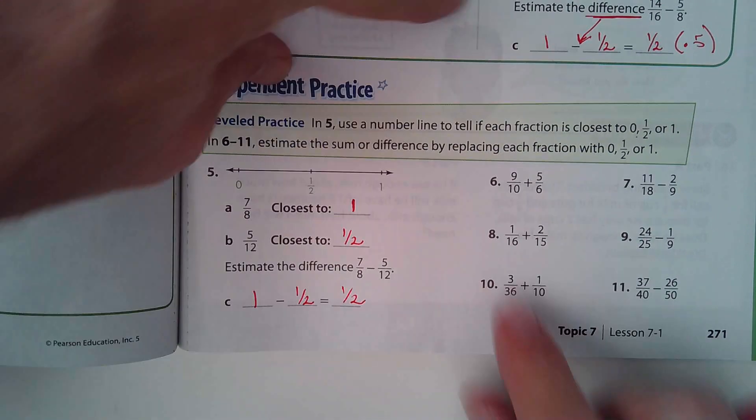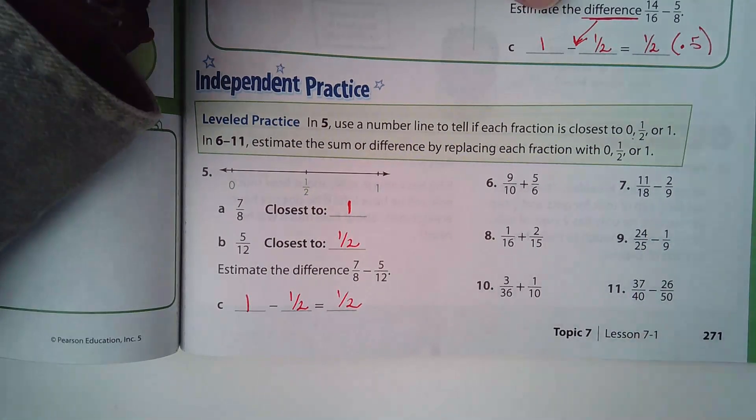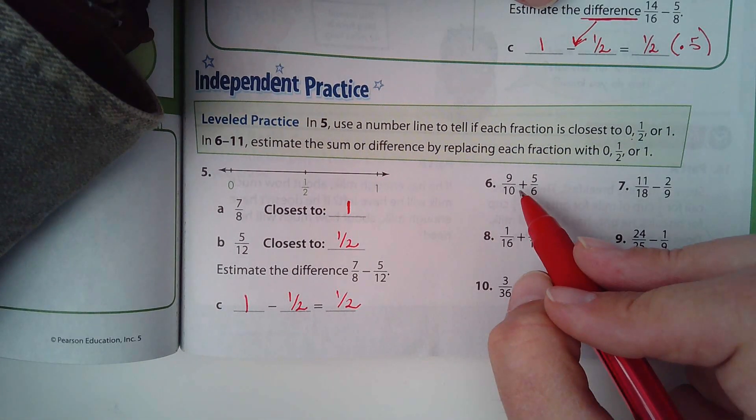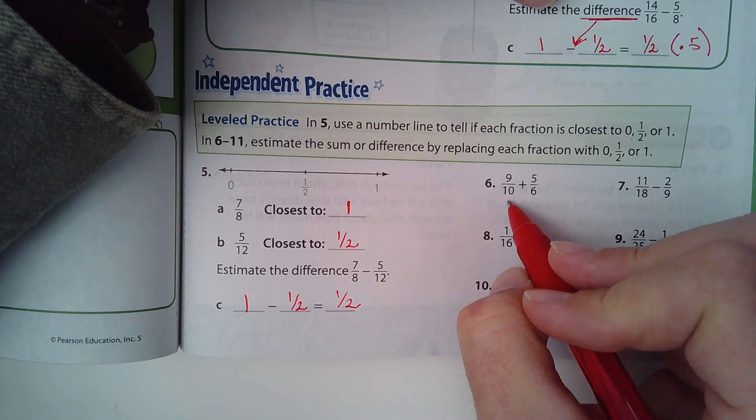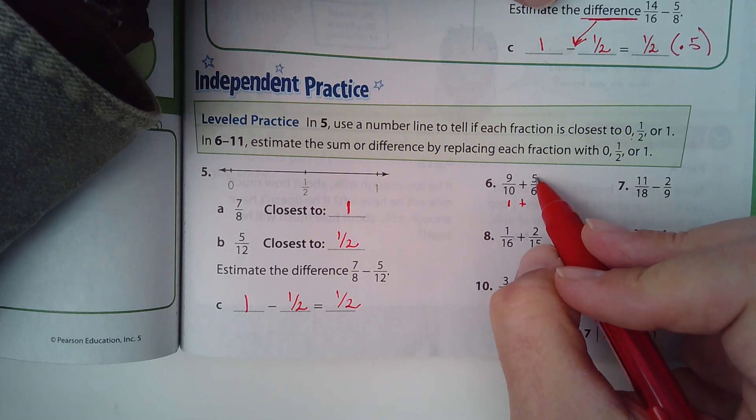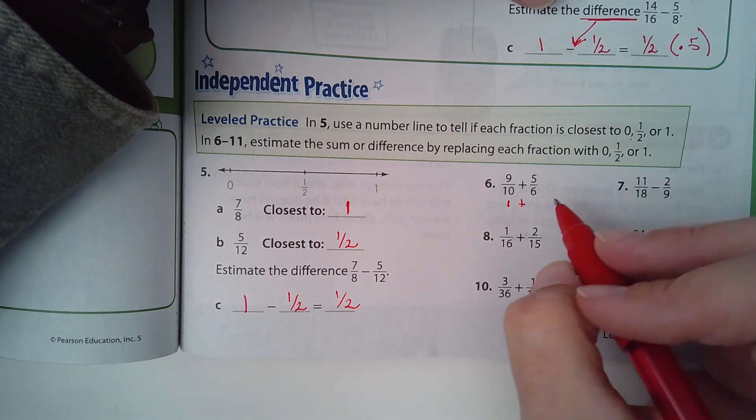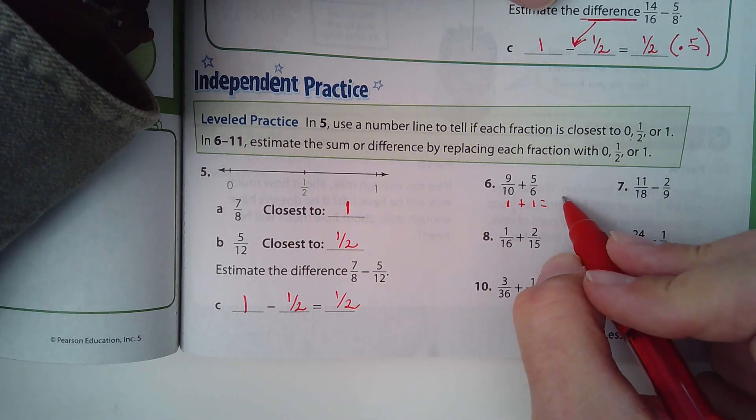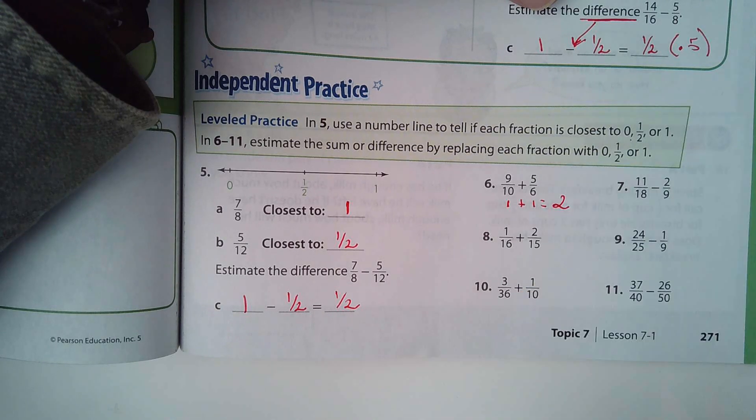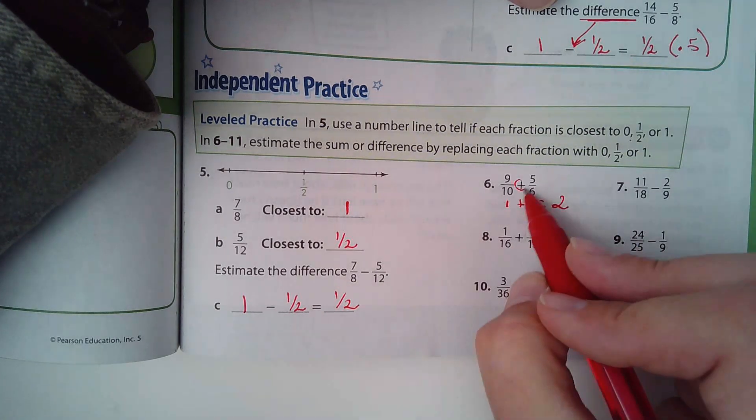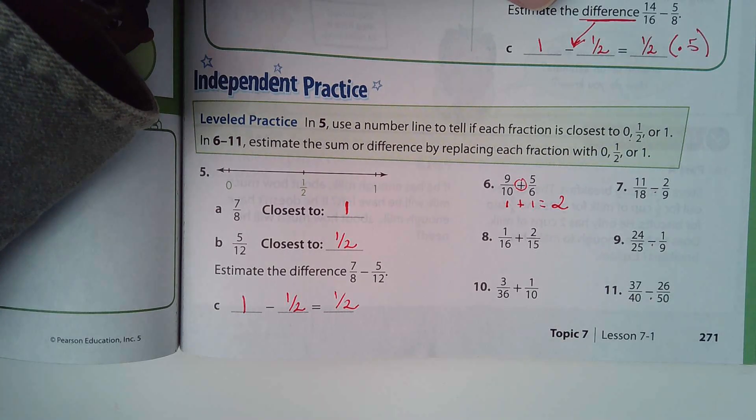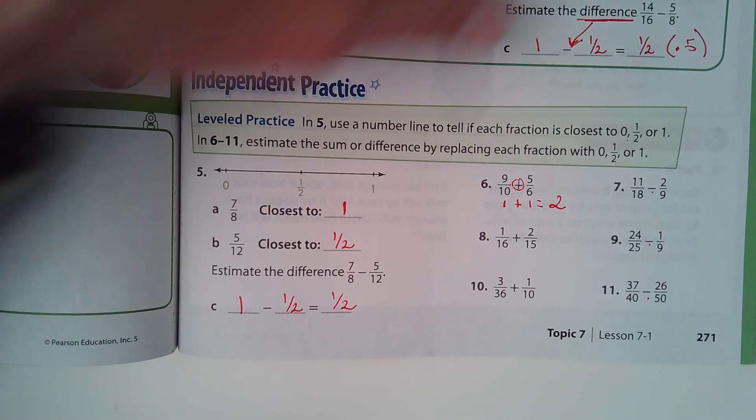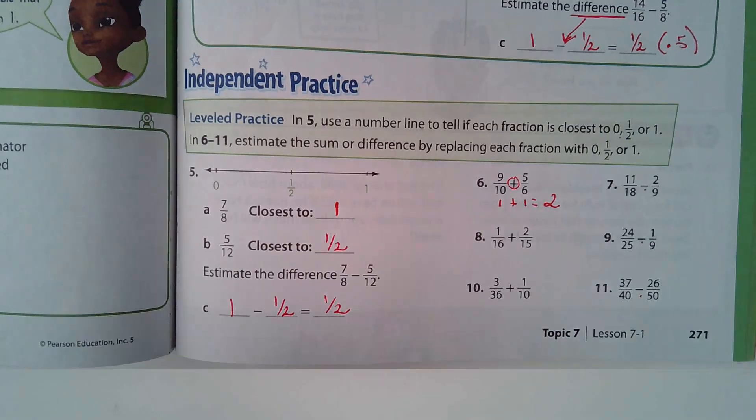And let me do number six for you, or with you. Nine-tenths is really close to one. One plus five-sixths, what's that really close to? One. So the answer to number six would just simply be two. Now notice this one was addition. There are some that are subtraction, so don't just think you're adding them all together.